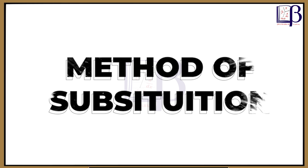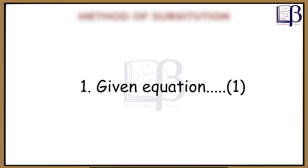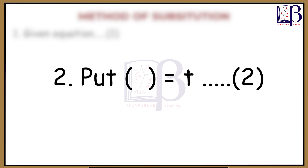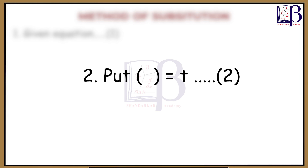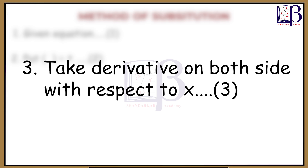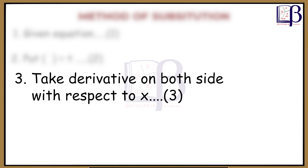Method of substitution. Given equation number 1: put the bracket equal to p — this is equation number 2. Take the derivative on both sides with respect to x — this gives equation number 3.